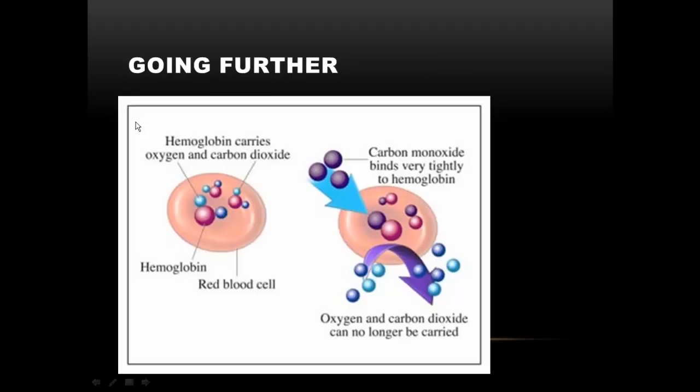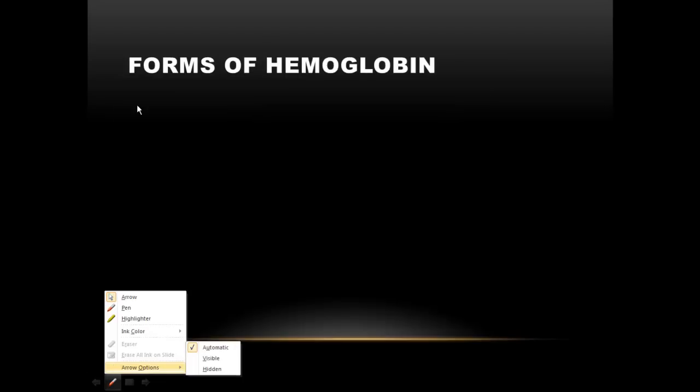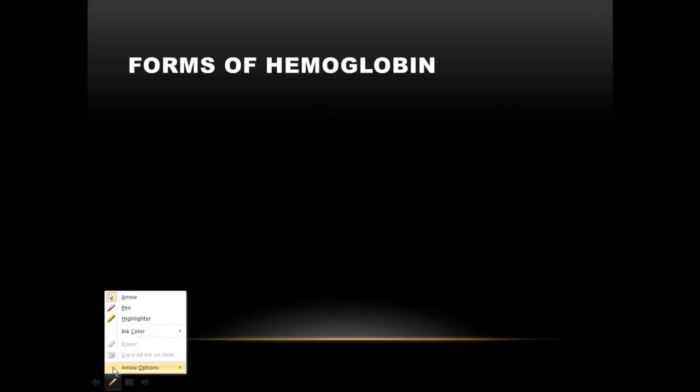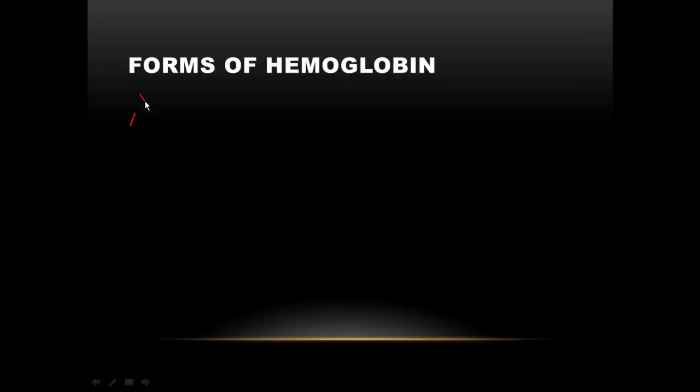Forms of hemoglobin. We see hemoglobin when combined. We see it as oxyhemoglobin. We see it as reduced hemoglobin. And we see hemoglobin as carbaminohemoglobin.